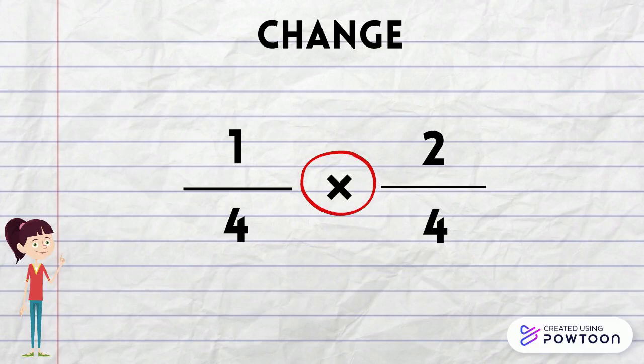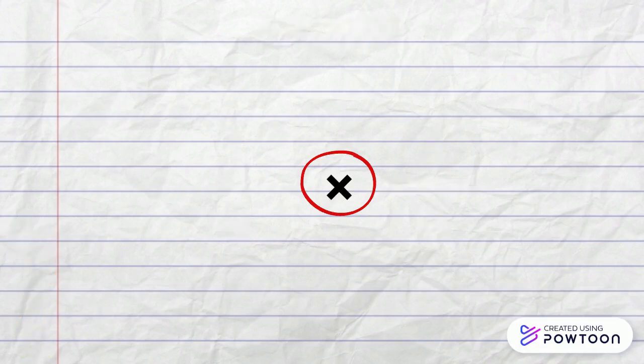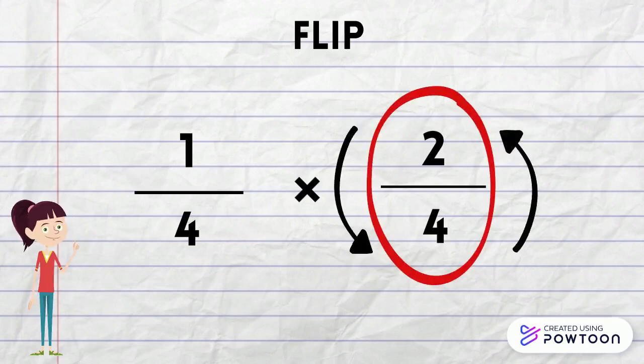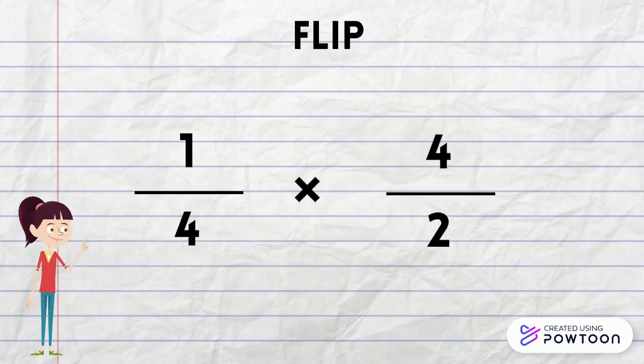But wait, don't multiply yet. We still haven't completed the third and final step. The final step before multiplying the two fractions together is to flip the last fraction. This is also known as the reciprocal. So basically, four will be our numerator and two will be our denominator.